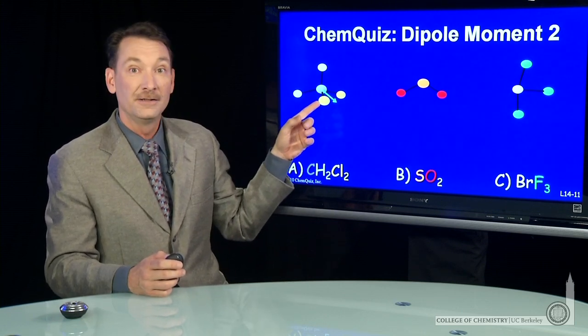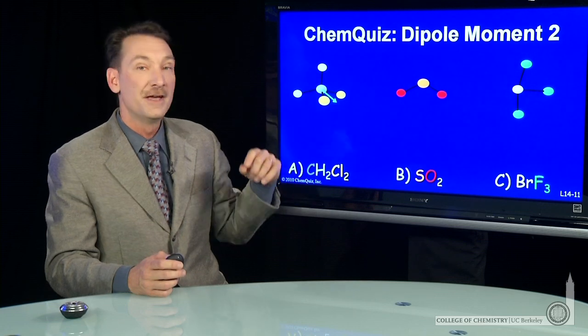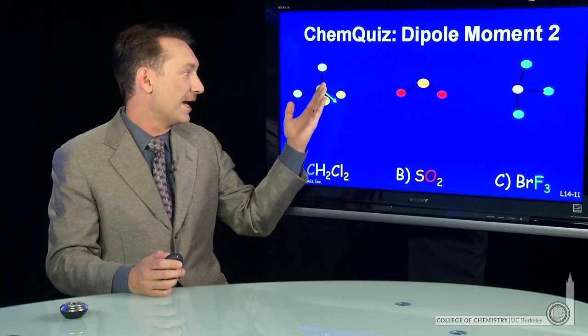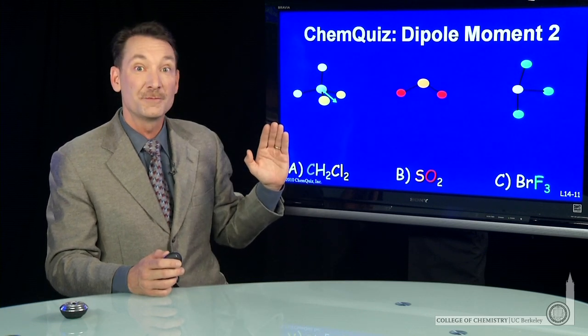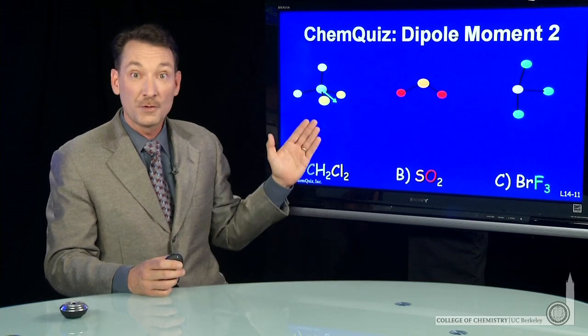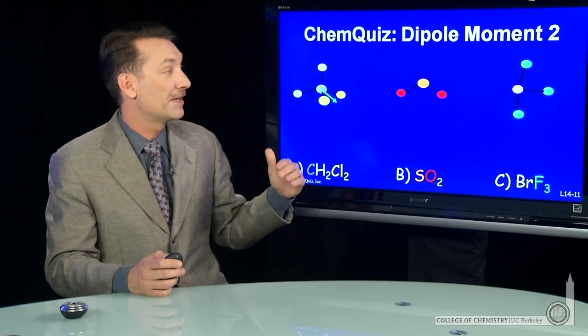The Cl atoms are more electronegative than the carbon. There'll be a dipole moment pointing away from the Cl atoms. And the H atoms, they'll also be a small dipole moment. Those won't cancel out. The whole molecule will have a dipole moment.